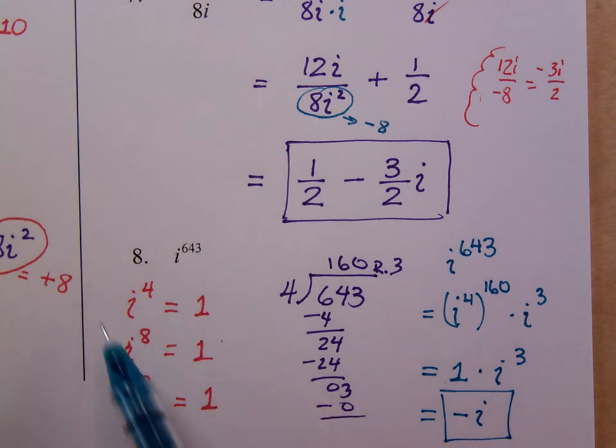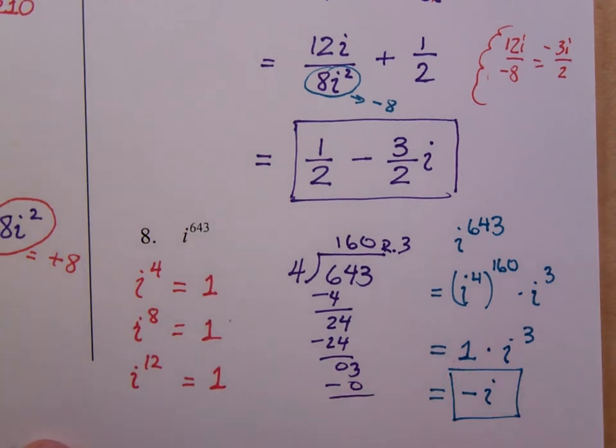Okay, these guys just keep going in a pattern. So it goes from i to the 1st, i squared, i to the 3rd, i to the 4th. And it just keeps going around in circles every time. So i to the 5th, 6th, 7th, 8th, 9th, 10th, 11th, 12th, and so on and so on. But we don't want to do that 643 times. That's why I see, okay, how many complete cycles will I make? I'll make 160 complete cycles. And then I've got to go 1, 2, 3, because it's a remainder of 3. I get negative i.